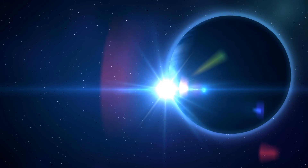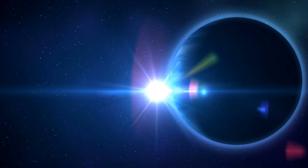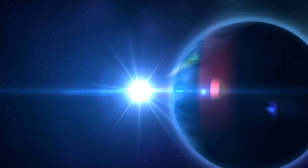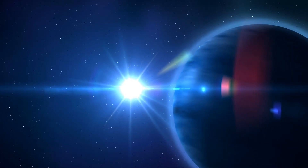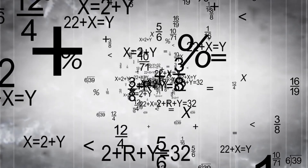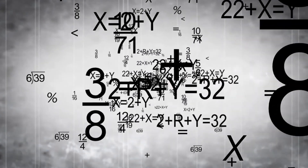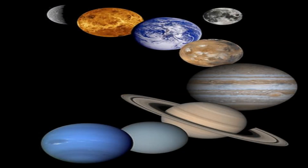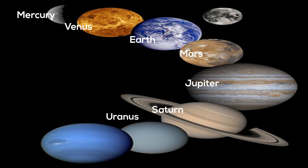Neptune is the eighth and furthest known planet from the sun in the solar system. It has the fourth largest diameter and the third largest mass. Neptune is not visible to the naked eye, and is the only planet in the solar system found by mathematical predictions rather than looking at it through a telescope. So there we go — our eight planets of the solar system.